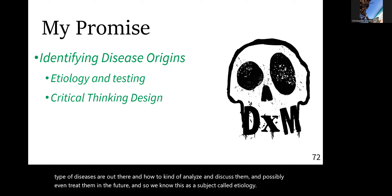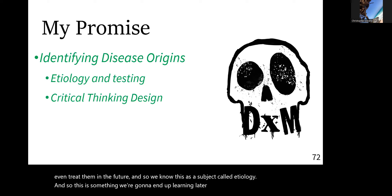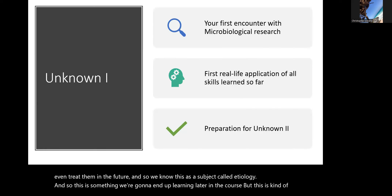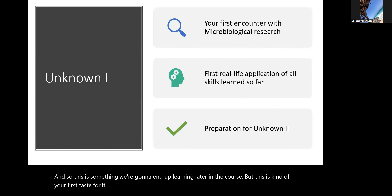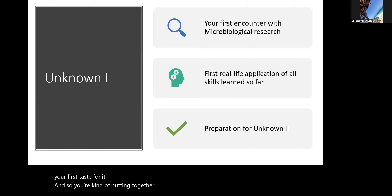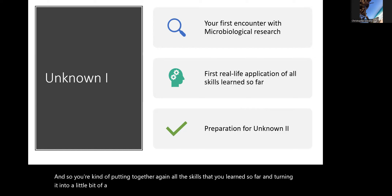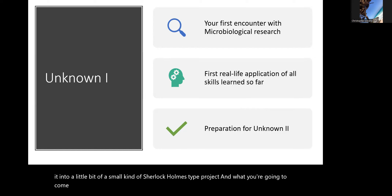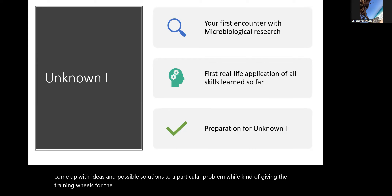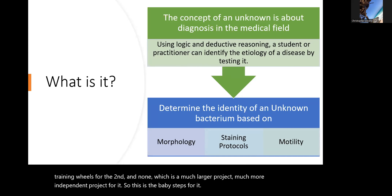This is your first taste of etiology — you're putting together all the skills you've learned so far and turning it into a small Sherlock Holmes-type project, coming up with ideas and possible solutions to a particular problem. This serves as the training wheels for the second unknown, which is a much larger, more independent project. This is the baby steps for it.